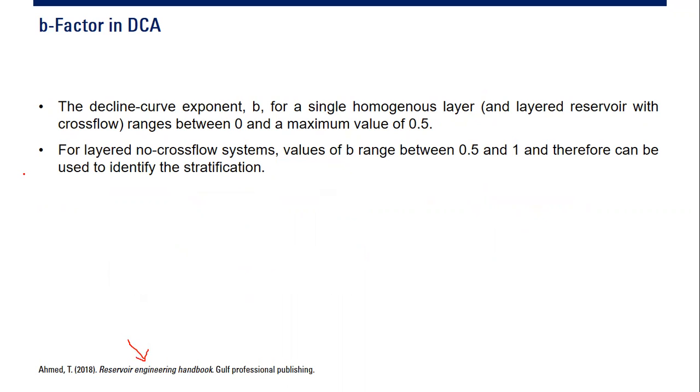The decline curve exponent b for a single homogeneous layer and layered reservoir with crossflow ranges between zero and a maximum value of 0.5. It cannot exceed 0.5. That's a very important statement.